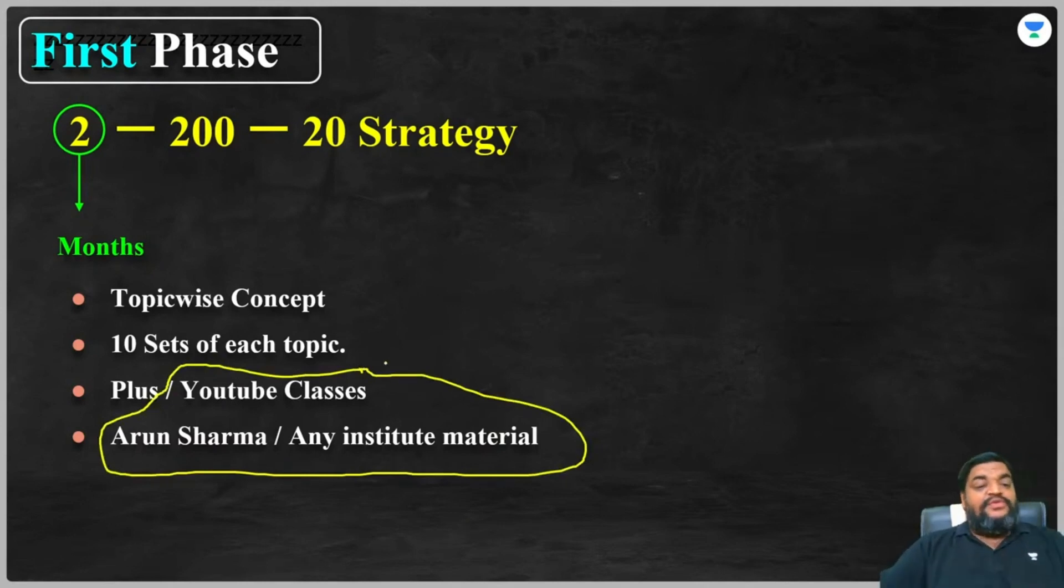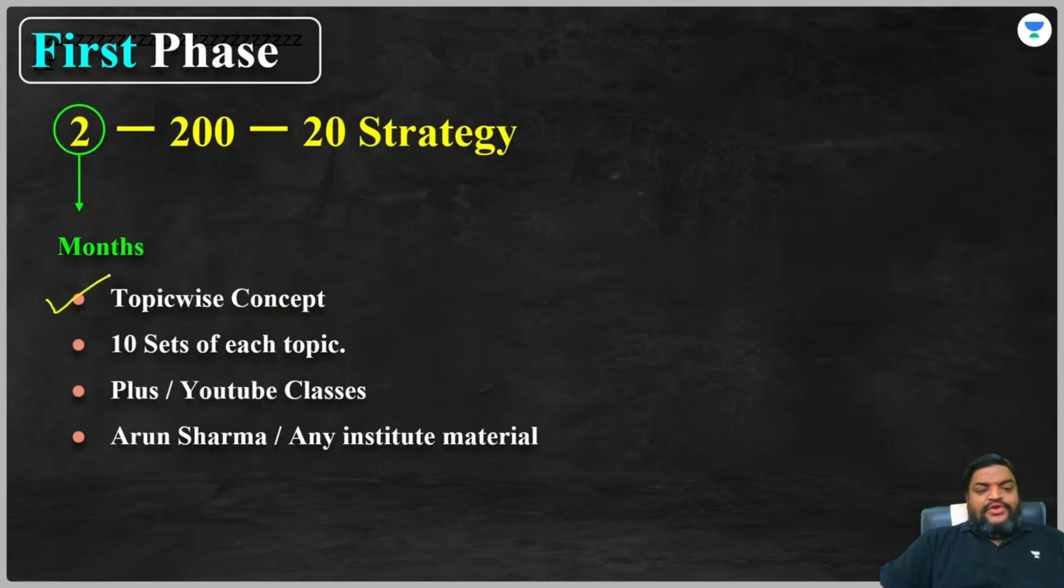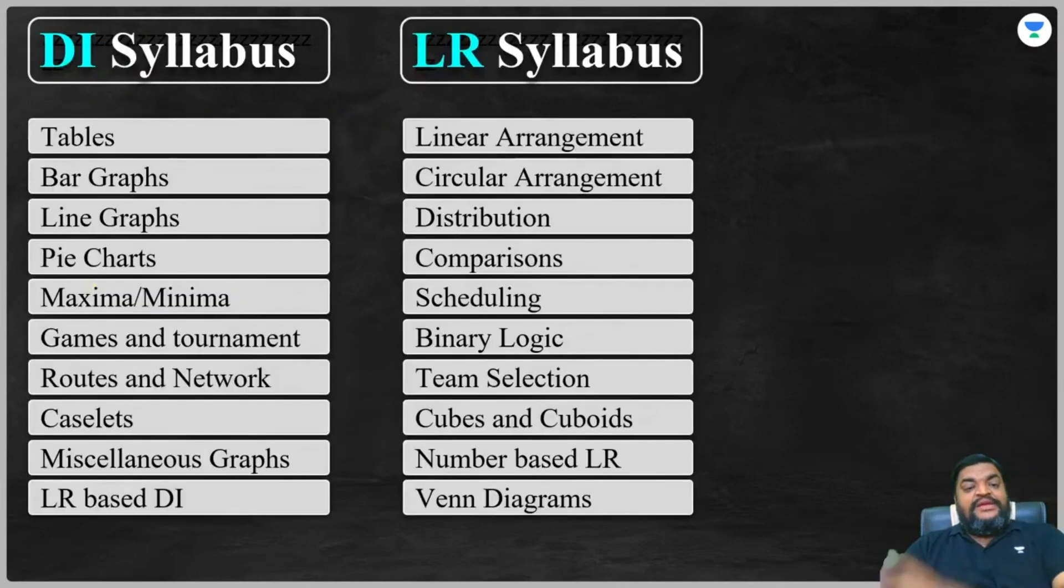Now let's move quickly to what is this 200, and this constitutes your first phase. We are not aware of the topics. Where are the topics? Here is a list of topics that you could follow for CAT 2023 DI and LR.